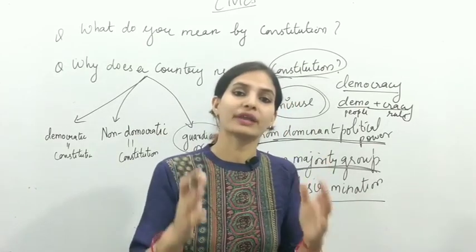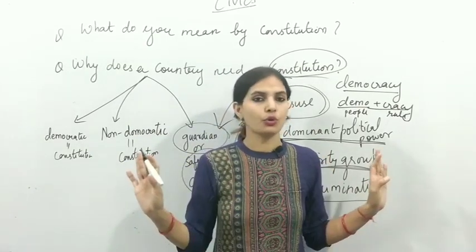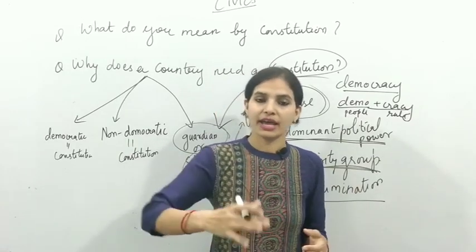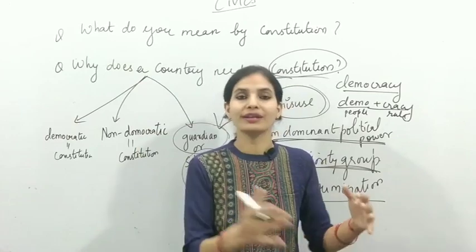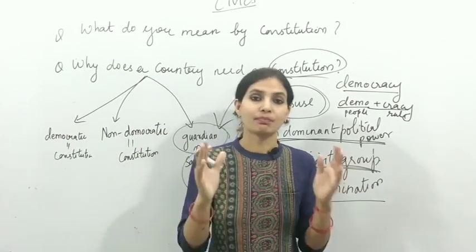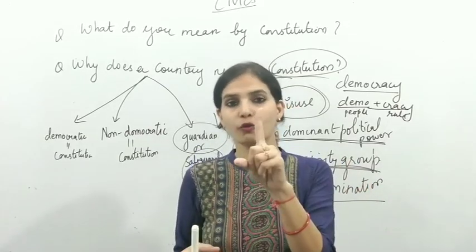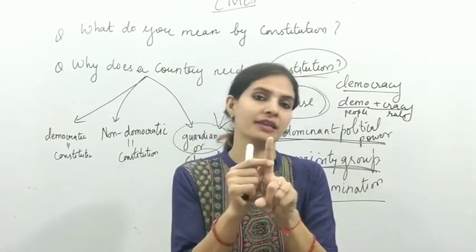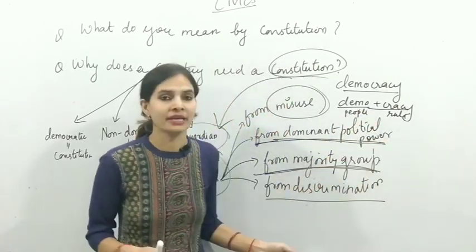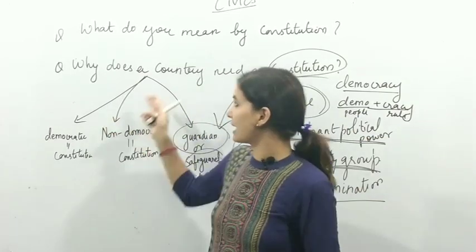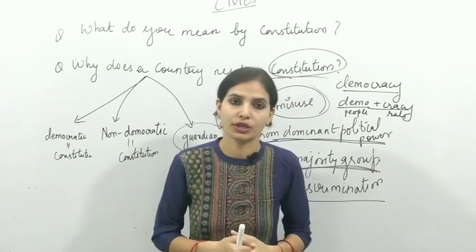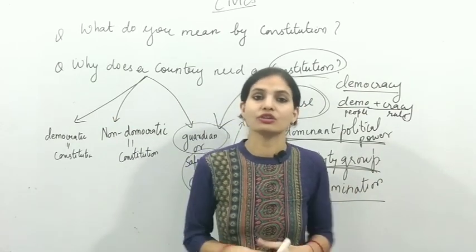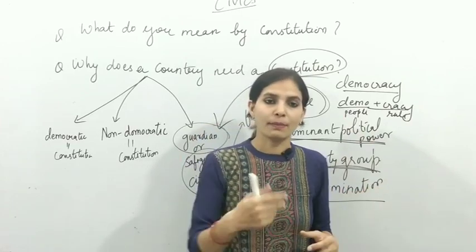Chahe koi bhi religion ya caste majority mein ho, hum sab equal hain — we are all equal before law. Power sabke paas barabar hai. Jaise mere paas ek vote dene ki power hai, usi tarah ek millionaire ya billionaire ke paas bhi sirf ek hi vote dene ki power hoti hai. Humara constitution humein in saari problems se bachata hai. Isliye humara constitution world ka best aur biggest constitution hai.